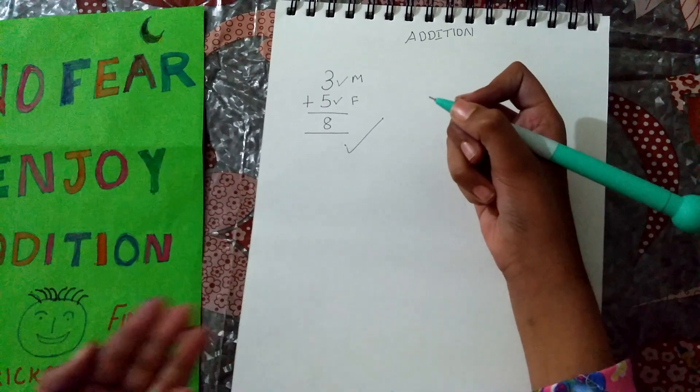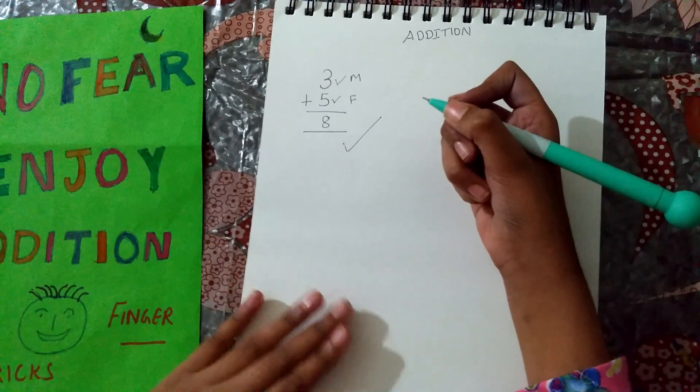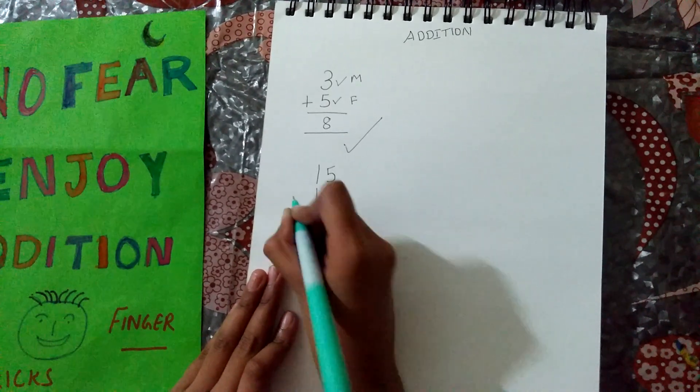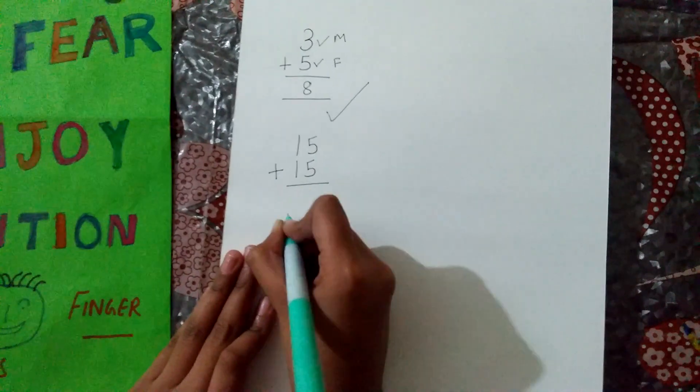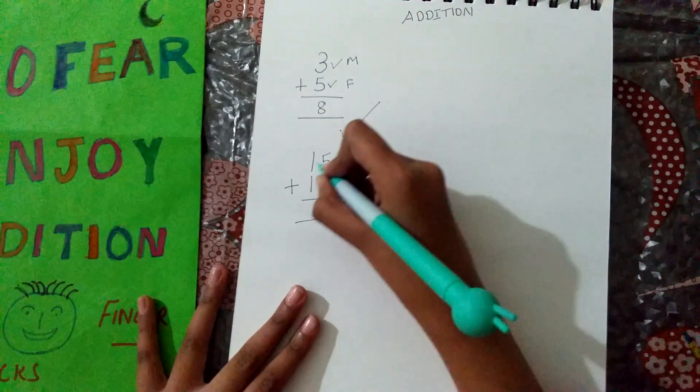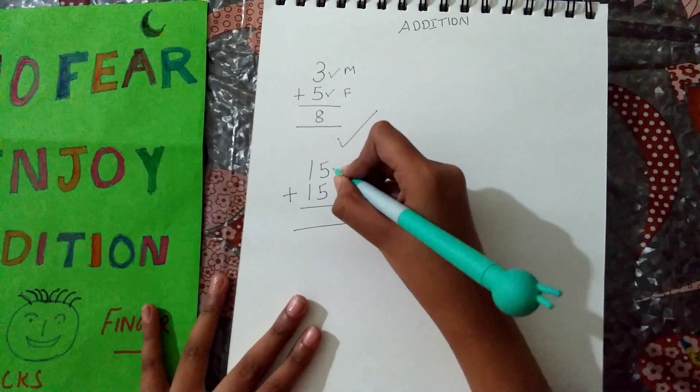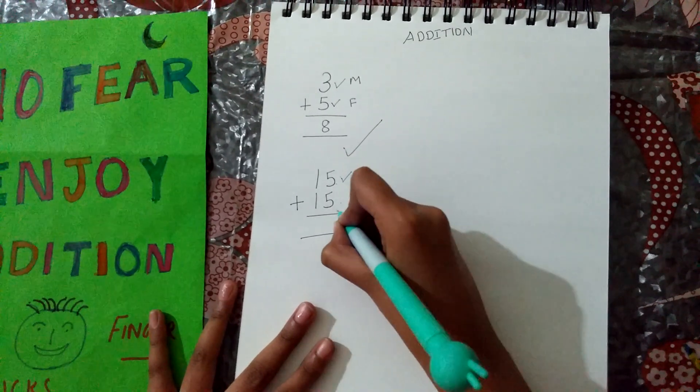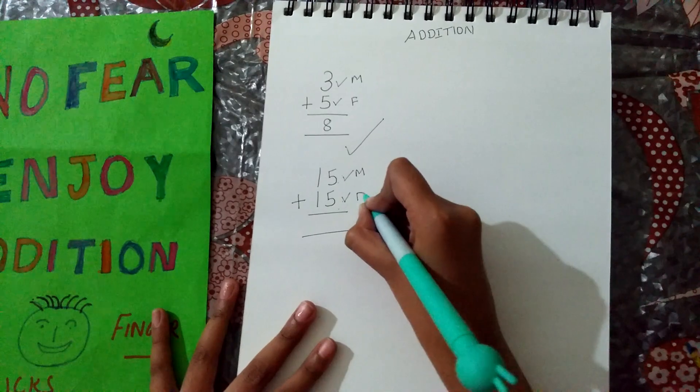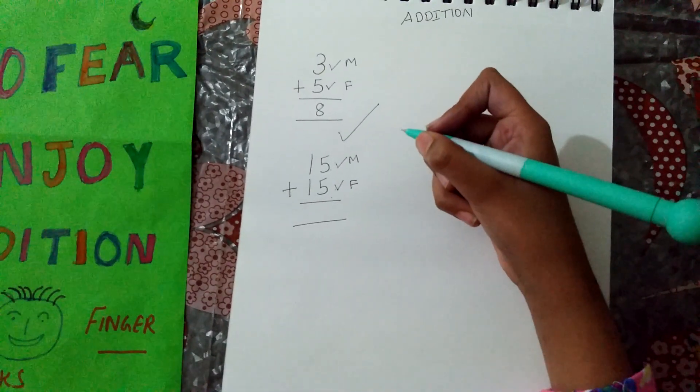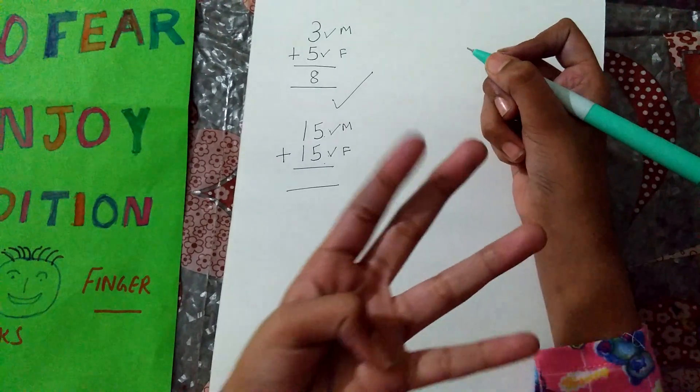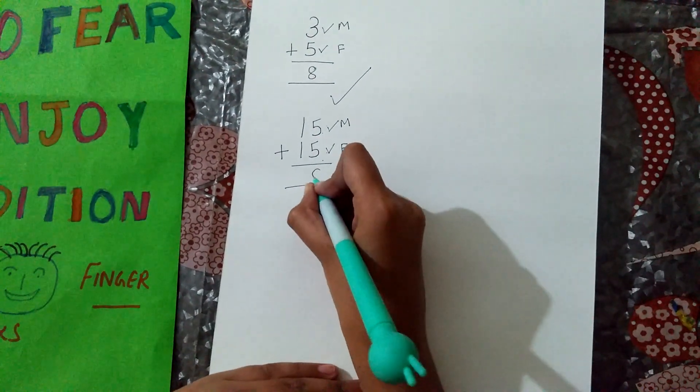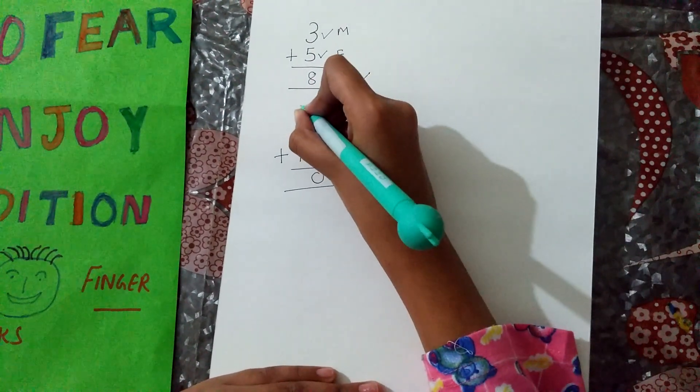The next number is 15 plus 15. You have to forget this 1. You only have to remember this 5 plus 5. 5, take it in mind and down 5 you have to take it in finger. After 5, it's 6, 7, 8, 9, 10. So, write over here 0 and take carry forward over here.